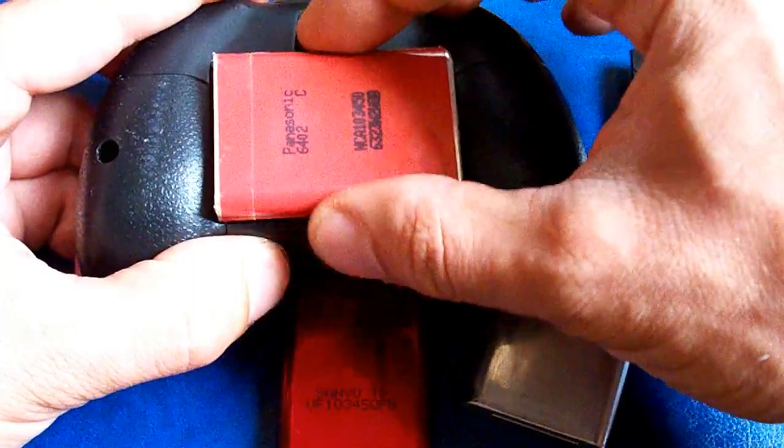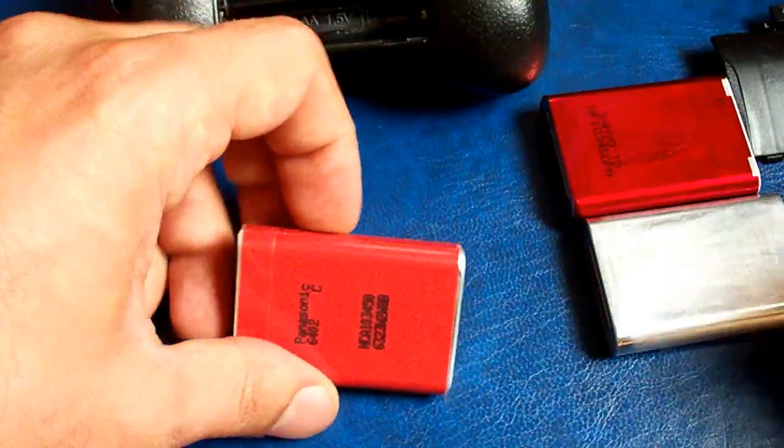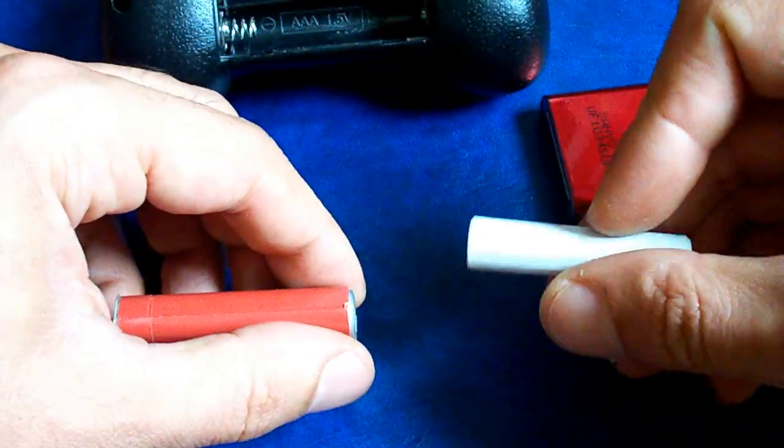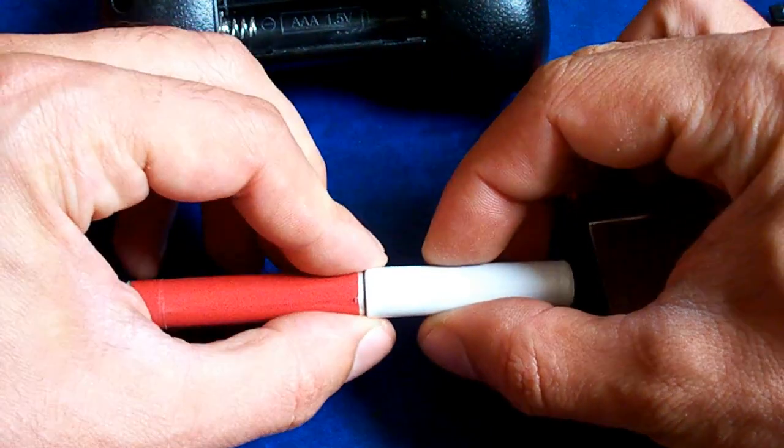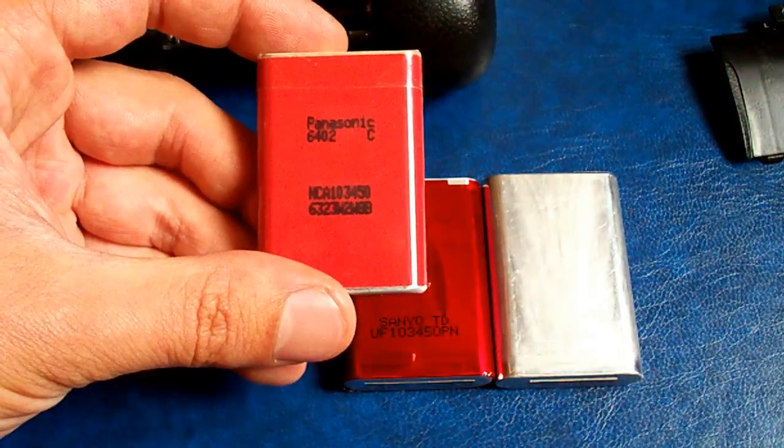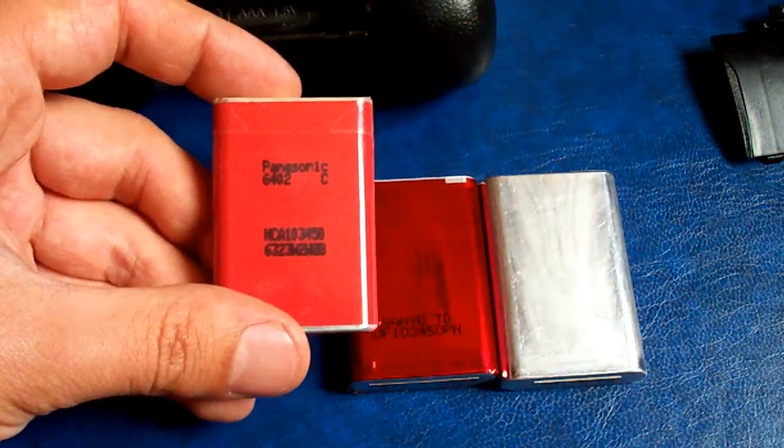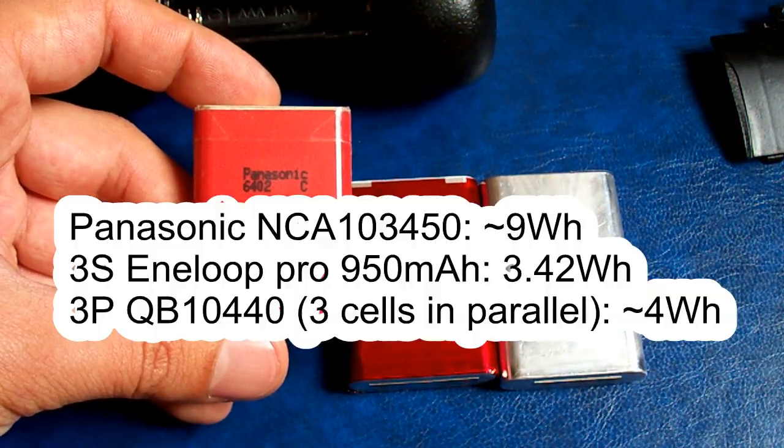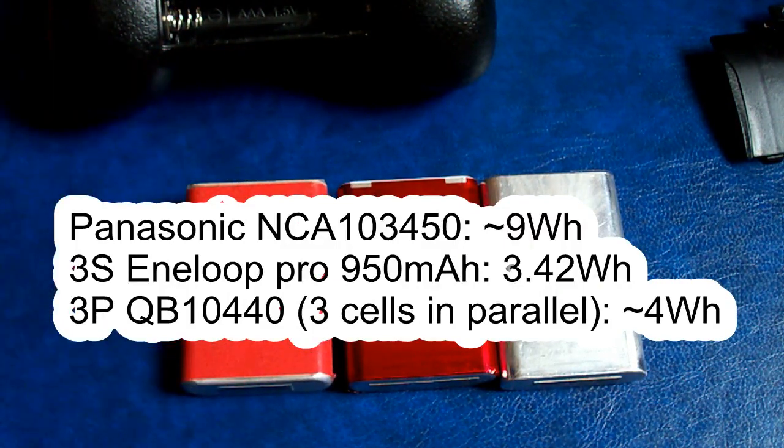They fit very well in the place of battery holder because the thickness is the same as that of a AAA cell and the width and length are suitable for replacement. The best option is Panasonic NCA 104450. In that case you will have 9 Wh of energy instead of 3.4 Wh with the best nickel metal hydride ones or 4 Wh with 3 Lithium Ion 10440s connected in parallel.